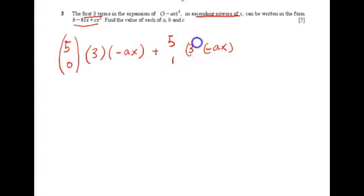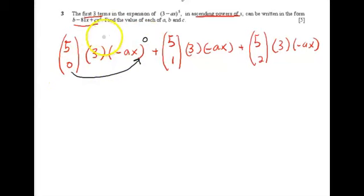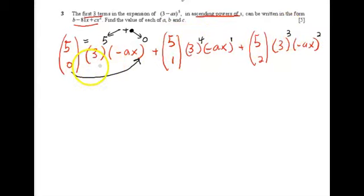Continuing, the second term uses ⁵C₁, and the third term uses ⁵C₂. For the powers, the two indices in each term must add up to 5: so if the first index is 0, the second is 5; if 1 then 4; if 2 then 3. Let us now calculate the values for each term.